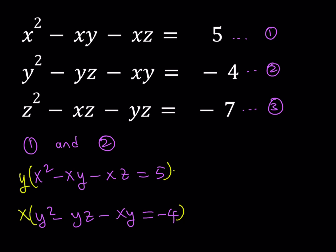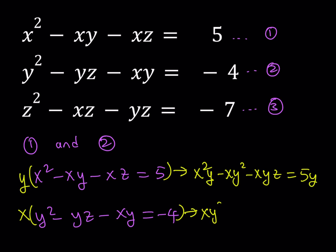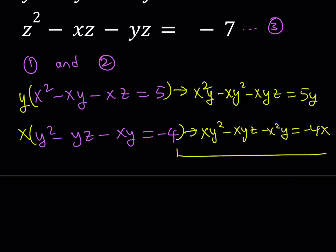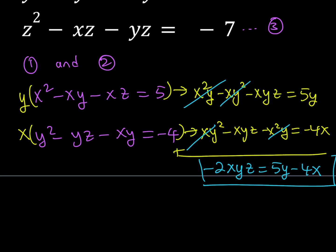Let's see what happens — we're going to get a lot of cancellations and end up with a nice term. The first one gives x squared y minus xy squared minus xyz equals 5y. The second one gives xy squared minus xyz minus x squared y equals negative 4x. Adding these up, x squared y cancels, xy squared cancels, and we end up with negative 2xyz equals 5y minus 4x. Let's save that.